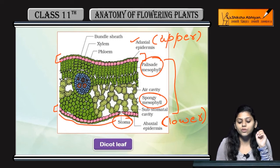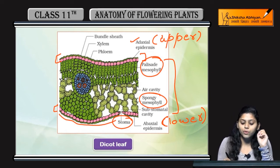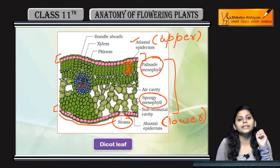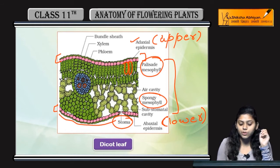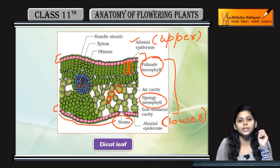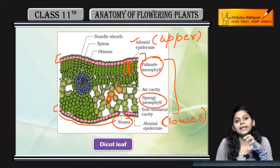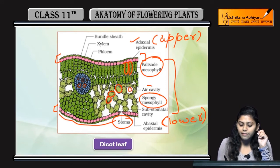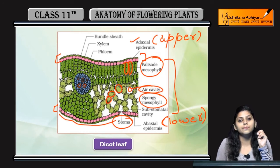जो palisade mesophyll हैं, वो elongated cells होंगे। And spongy mesophyll — spongy, circular, spherical इस shape के होंगे। And spongy mesophyll के बीच में air cavities present होंगे — spaces present हैं।